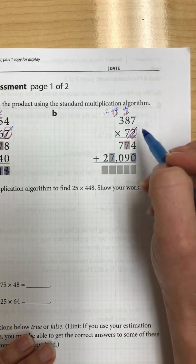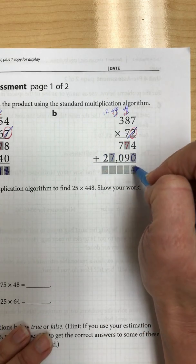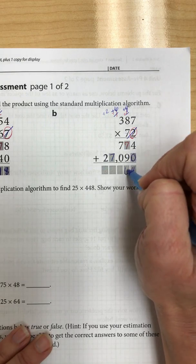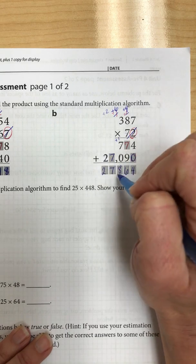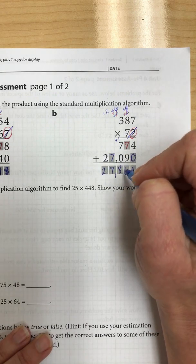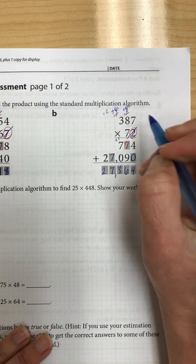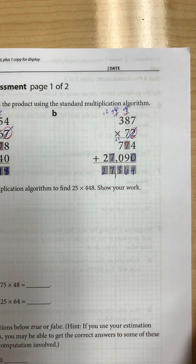Now all I have to do is add those up. 4 plus 0 is 4. 7 plus 9 is 16. 7 plus 1 is 8. I have 7 and 2. So 27,864 for my final answer.